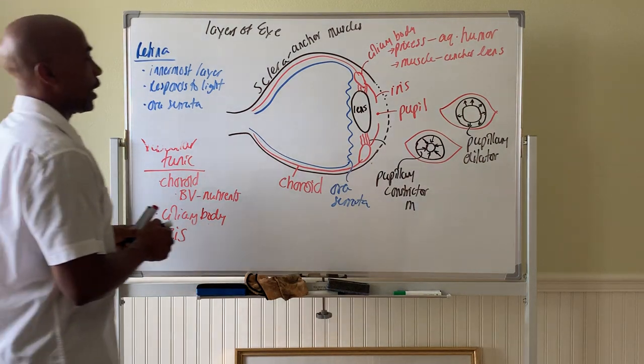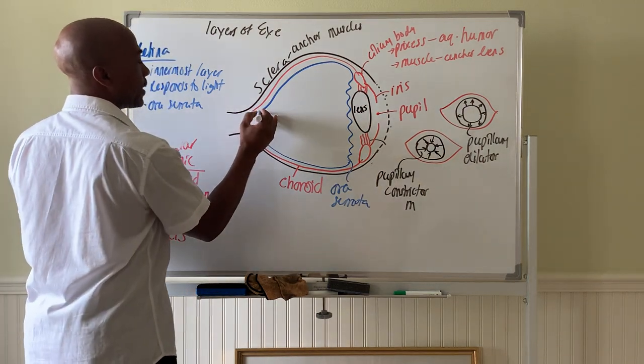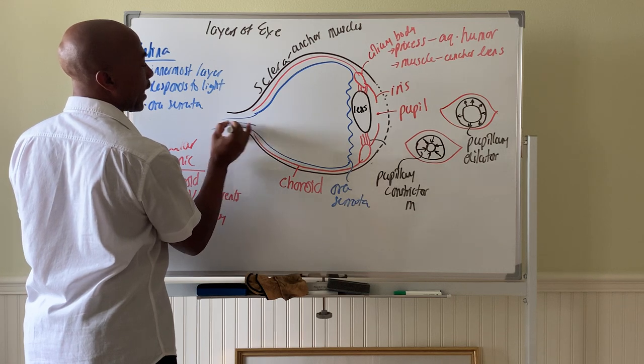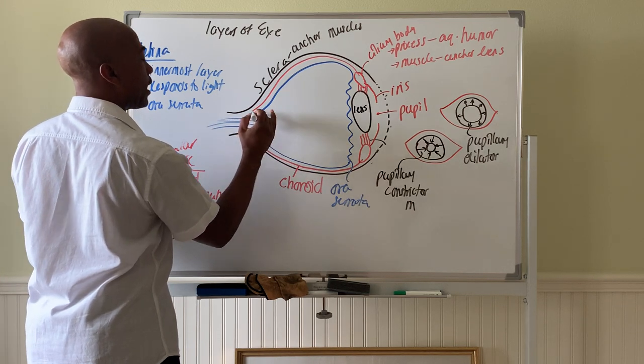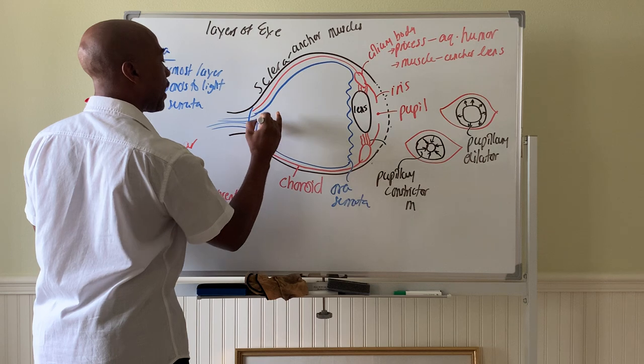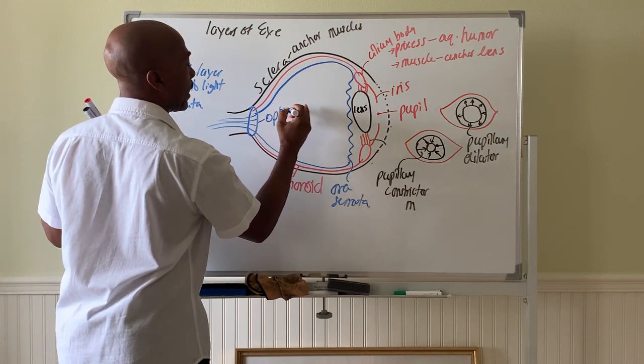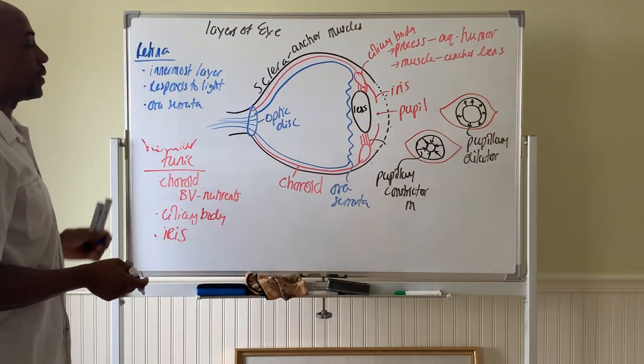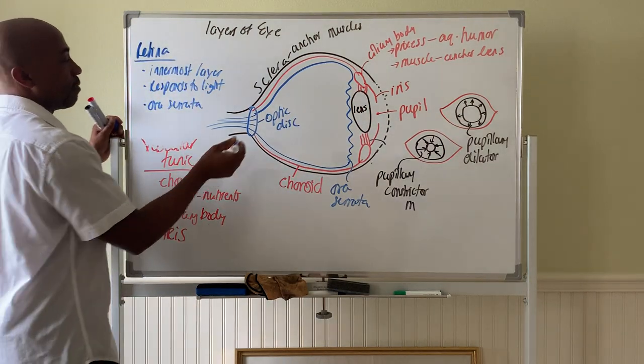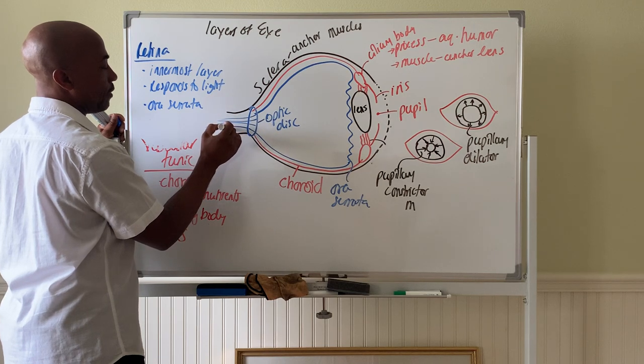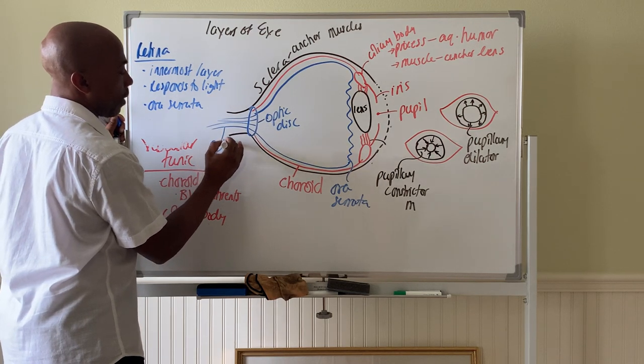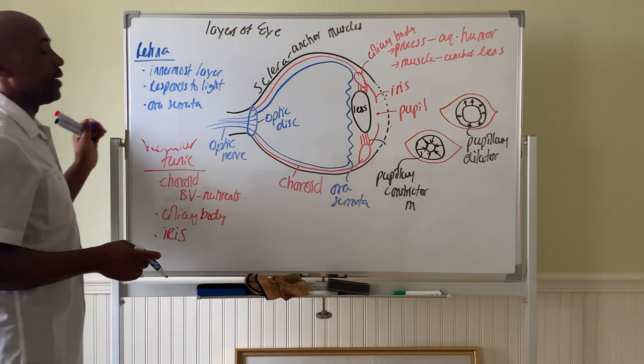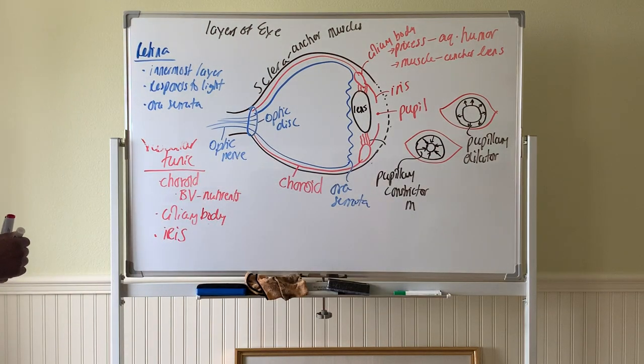Okay. While we're here, so the retina eventually exits the eye. The neurons in the retina will exit the eye in an area in the back of the eye called your optic disc. Optic disc there and from the optic disc, the neurons that leave, they form your optic nerve. Alright. So that's the eye in a nutshell.